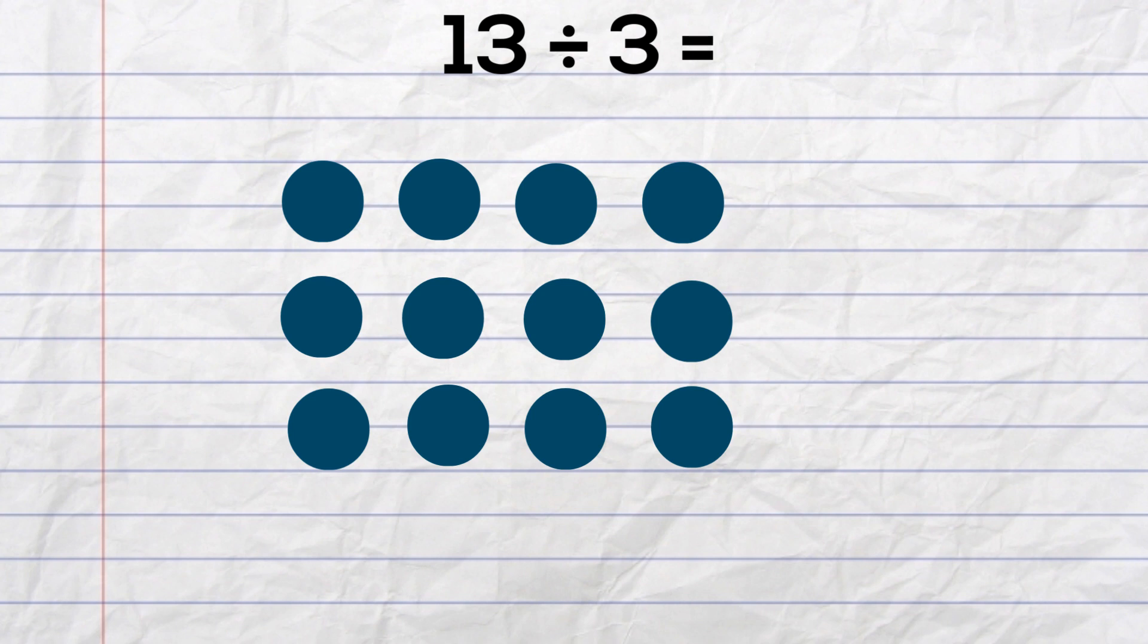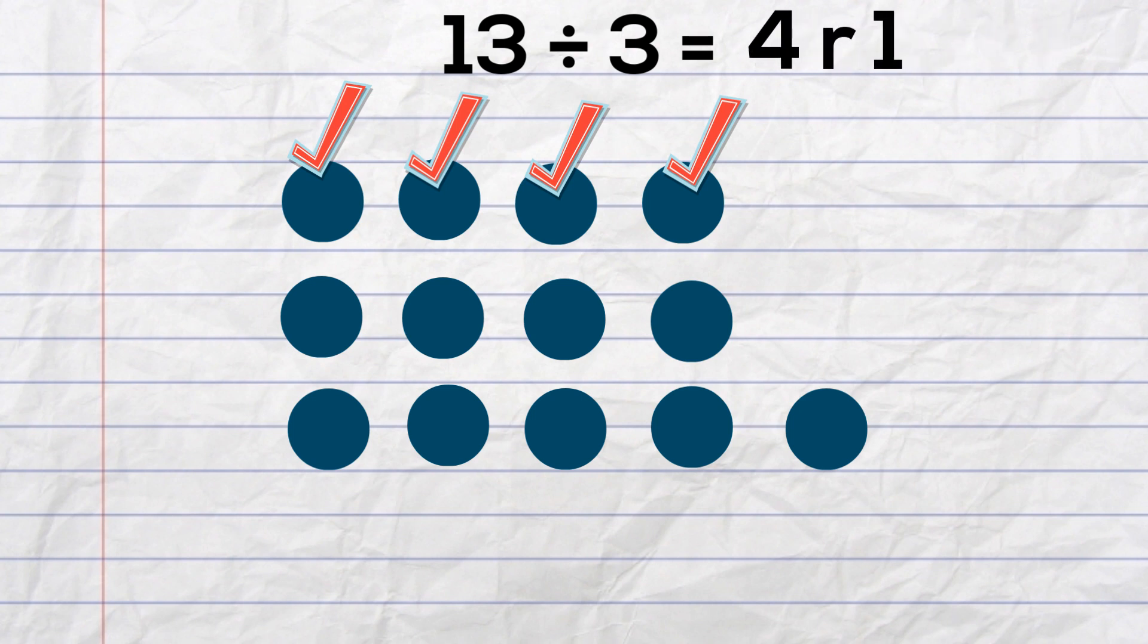So now I count the number of columns for the answer. I have 1, 2, 3, 4 columns, and then a remainder of 1. So 13 divided by 3 is 4 with a remainder of 1.